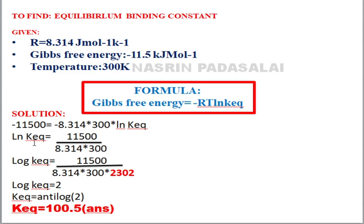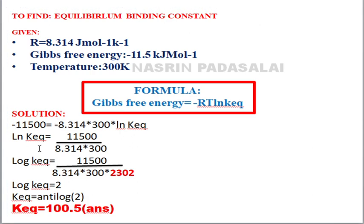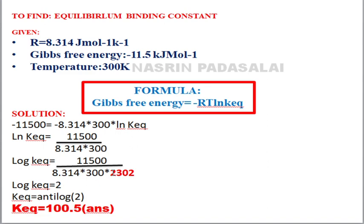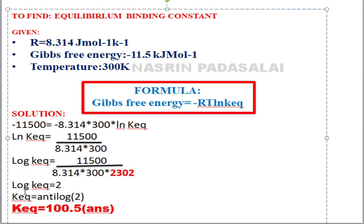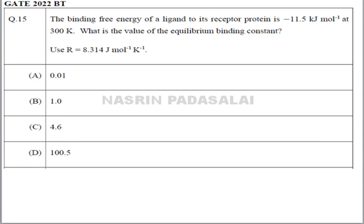Rearrange the equation: ln(K_EQ) equals the values moved to the other side — what was in multiplication becomes division. The two minus signs cancel out. Convert the natural logarithm to log base 10 by multiplying by 2.303. After calculation, log(K_EQ) equals 2. Therefore K_EQ equals antilog of 2, which is approximately 100. Option D, 100.5, is the correct answer.